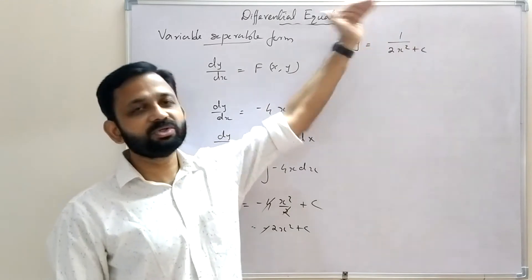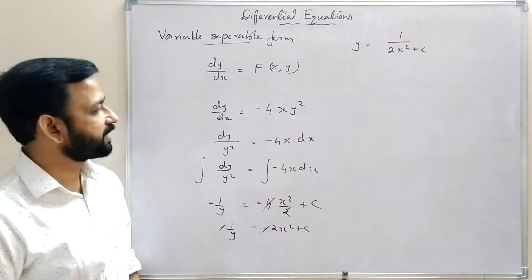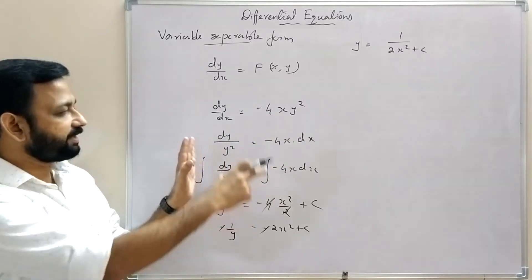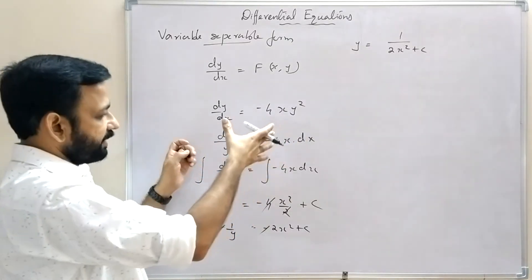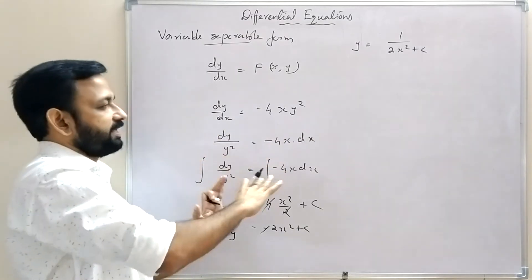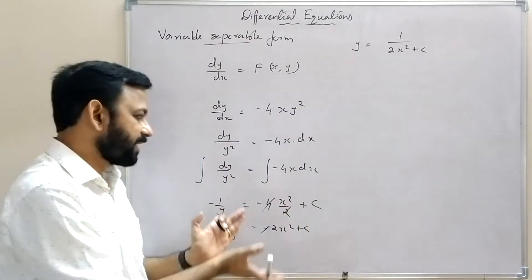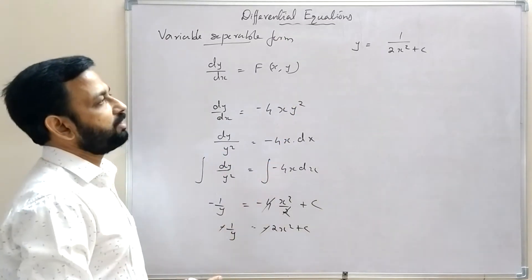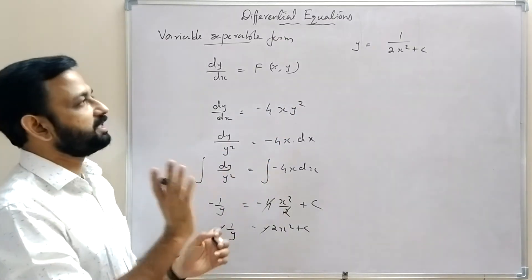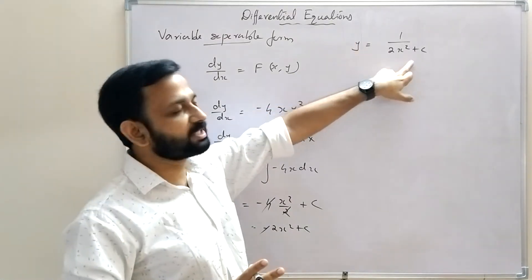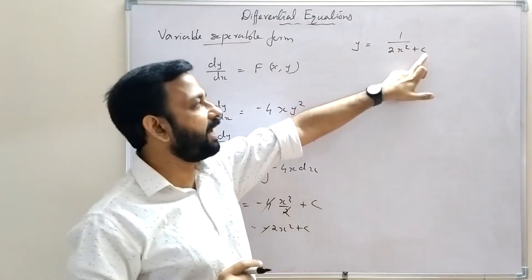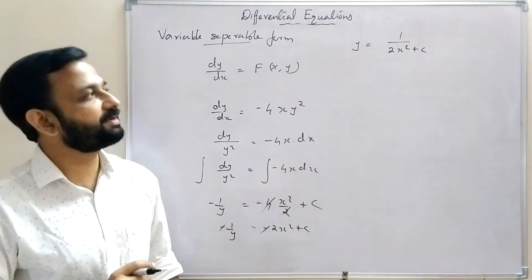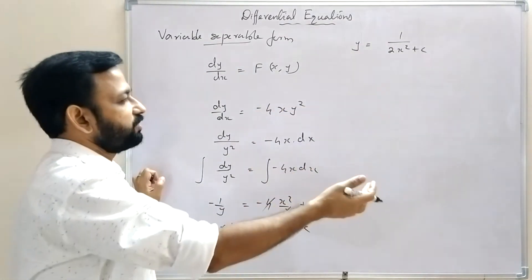The general solution of dy/dx = -4xy² is y = 1/(2x² + c), where c is an arbitrary constant. If we want to find a particular solution, for example when x = 1 and y = 1, we replace x and y by 1: 1 = 1/(2 + c).